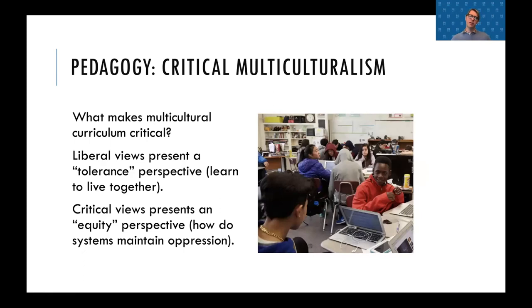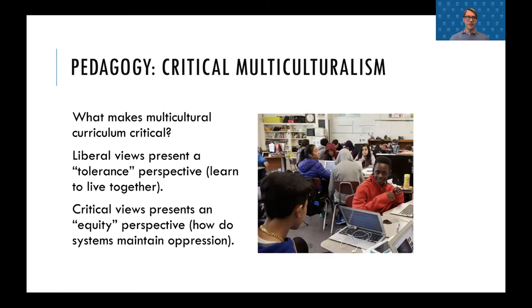We also argue that the curriculum should have a critical multiculturalism to it. Traditionally, multicultural curricula have presented liberal, tolerance-oriented perspectives. And while tolerance is not bad, it is the lowest level of support for oppressed people, as Sonia Nieto would call it. Instead, we argue there needs to be critical views of the past — students should be looking at how systems of oppression are created and maintained. We take a lot from the work of Christine Sleeter and others here.